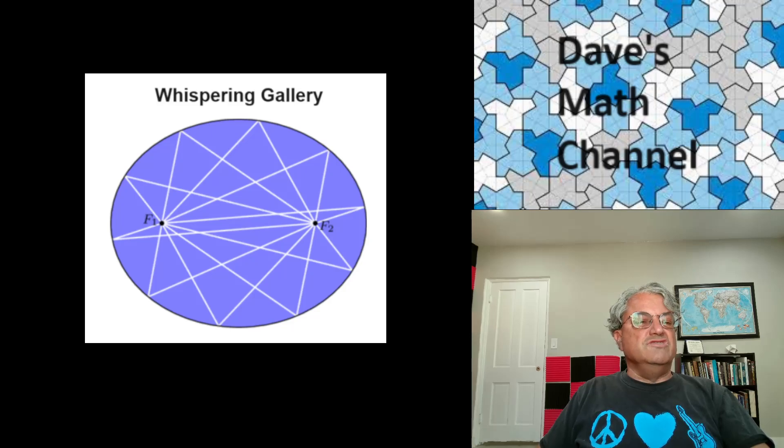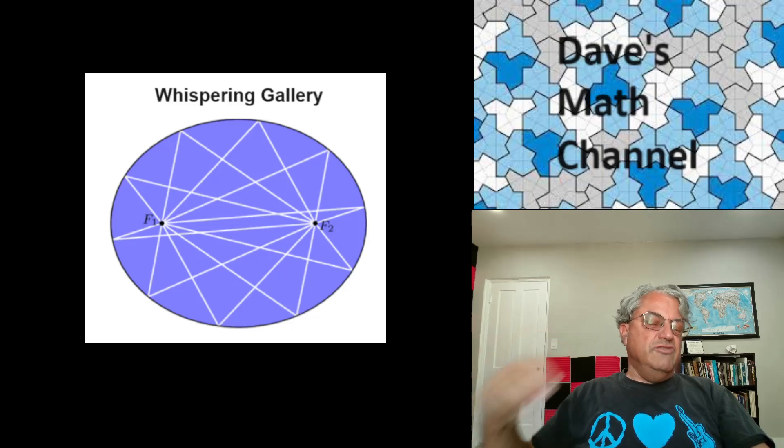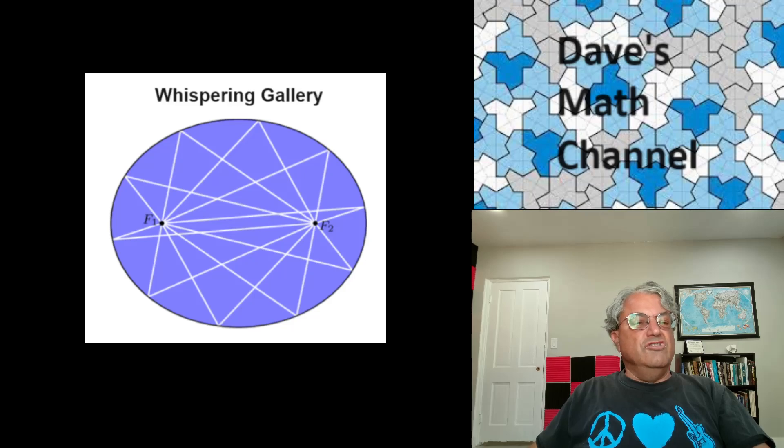if you stand at one of these foci of this ellipse you can just whisper and then you can have a friend at the other focus. You could just whisper. This room could be a really big room as long as nobody else. Other people could even still be talking in the room, but you could just whisper to your friend and they'll hear you because all the sound waves are going to get reflected off the walls and they're going to get focused at the other focus. Pretty nice. So that's how a whispering gallery works.